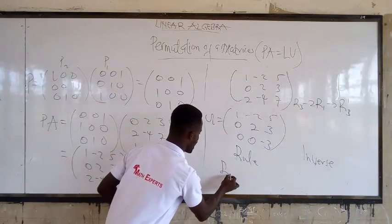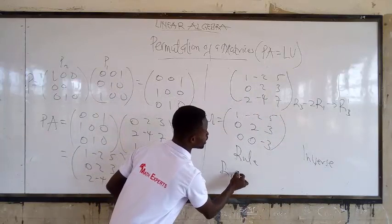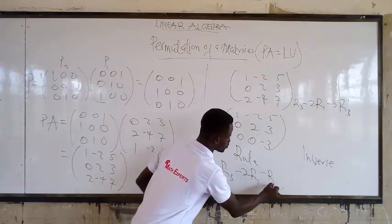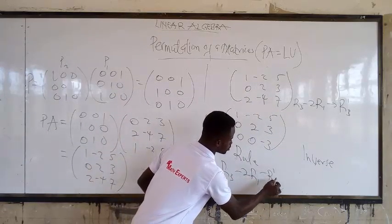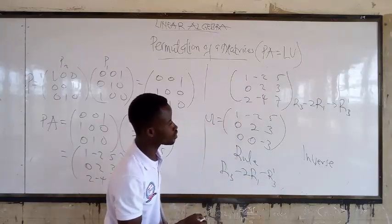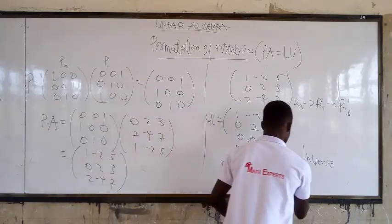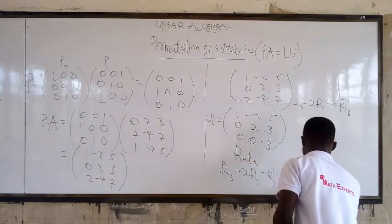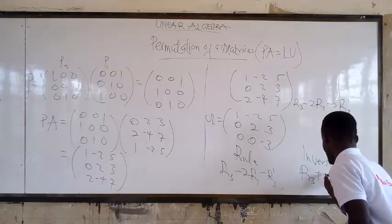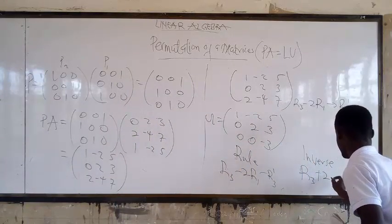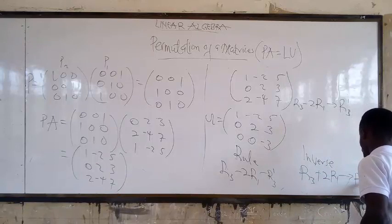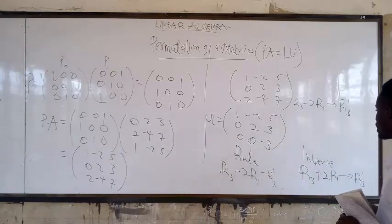Now to get the lower triangular matrix L, we use the inverse rule. The rule is: R3 minus 2·R1 into new R3. The inverse of that becomes R3 plus 2·R1 into new R3.